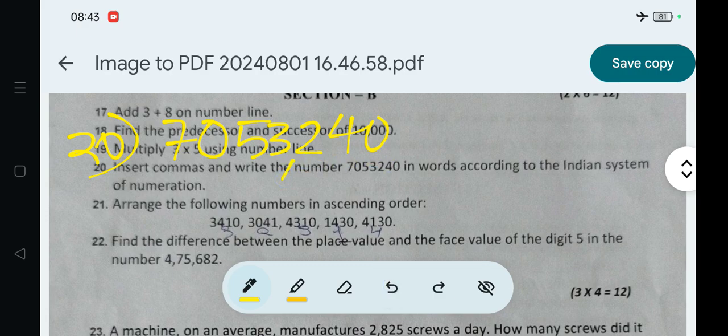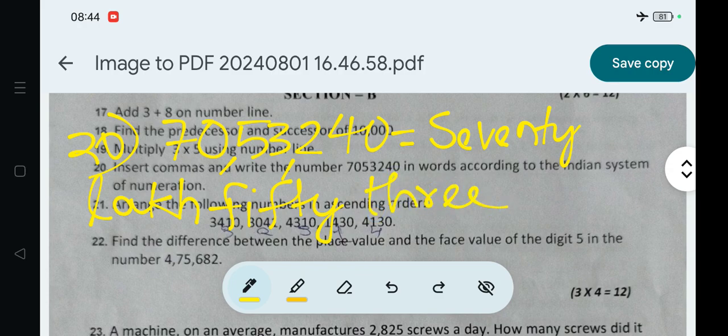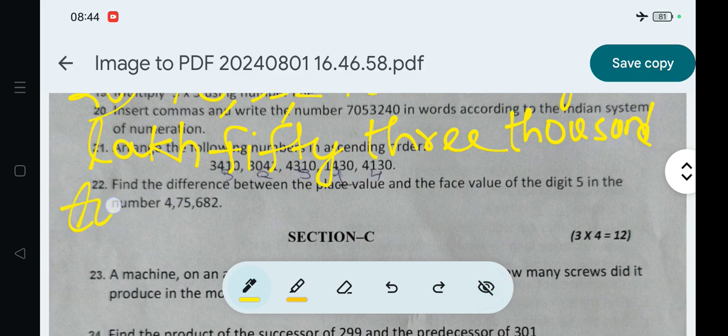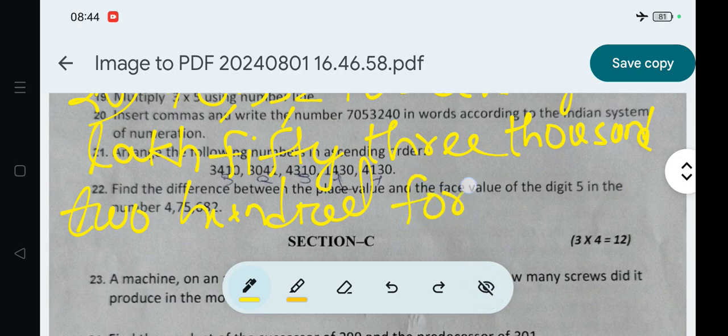Indian numeration: 1, 2, 3, then 1, 2, then 2, 2. This is 7,05,3240. In words: Seven lakh, fifty-three thousand, two hundred forty.